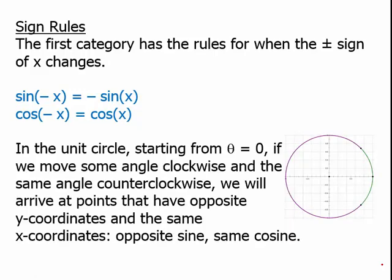In the unit circle, starting from zero, if we move some angle clockwise and then the same angle counterclockwise, we'll arrive at points that have opposite y coordinates and the same x coordinates. So those two points have the exact same x coordinate, but they have opposite y coordinates. And that's why the sines are negatives of each other, but the cosines are identical.